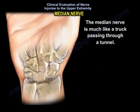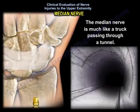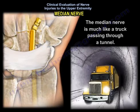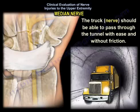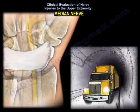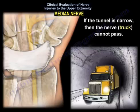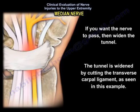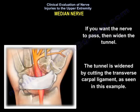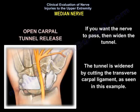The nerve is much like a truck passing through a tunnel — the nerve should be able to pass through the tunnel with ease and without friction. So if the tunnel is narrow, the nerve cannot pass. And if you want the nerve to pass, then widen the tunnel. We widen the tunnel by cutting the transverse carpal ligament, as you see here in this example.